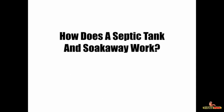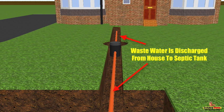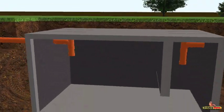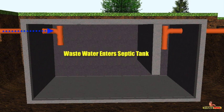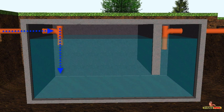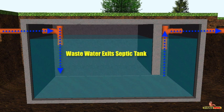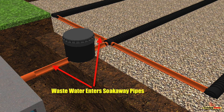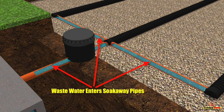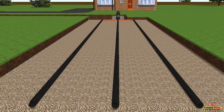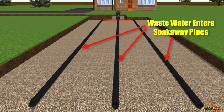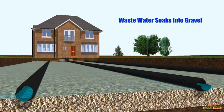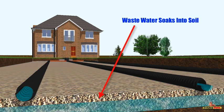So how does a septic tank and soak away work? Well, it's quite simple. Wastewater is discharged from a property towards the septic tank. The wastewater then enters the septic tank from the house, fills up and exits the septic tank via the outlet pipe. The wastewater then leaves the septic tank and enters the soak away system, making its way through the soak away pipes, where it is then slowly but naturally discharged into the gravel and soil.